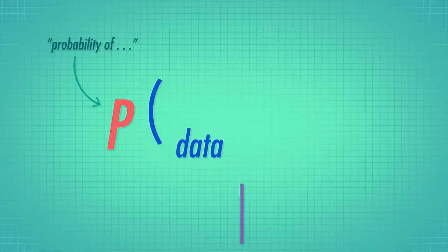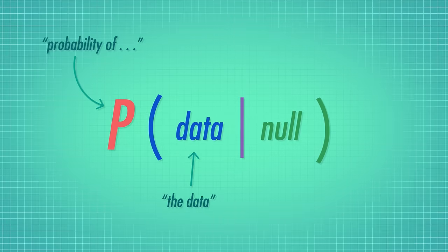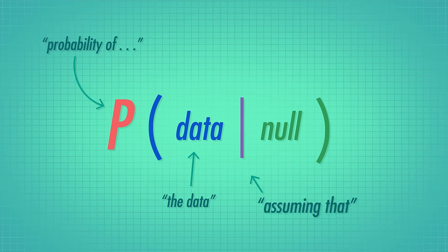Remember, to calculate a p-value, we first assume that the null distribution is the true distribution our sample was taken from. Then we calculate how often we'd see a value that is at least as extreme as our observed value. So in probability terms, the p-value is the probability of getting a sample as or more extreme than ours, given that the null hypothesis is true. So all the values that we see in the sampling distribution are means we could actually get if the null hypothesis was true.